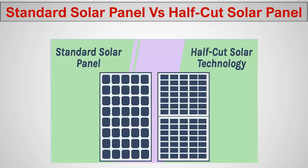Next, let's look at standard solar panels versus half-cut solar panels. For many years we have had standard solar panels, and in recent years the half-cut solar panel technology was introduced. Half-cut solar technology means we take the standard panels and cut them in half, making more cells. Compared to eight cells in one column for a standard panel, a half-cut panel has double — 16 cells in one column.